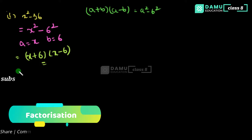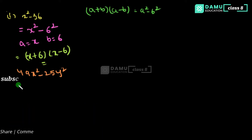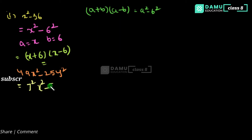Next, the second one is 49x squared minus 25y squared. There are two perfect square numbers with a minus, so this is also the a squared minus b squared formula. We need to convert: 49 is 7 squared and 25 is 5 squared, so we can write 49x squared minus 25y squared as 7x whole squared minus 5y whole squared.